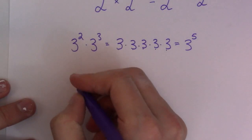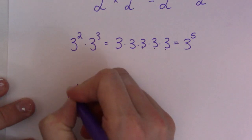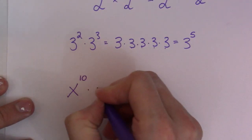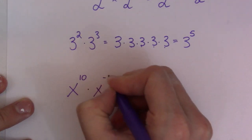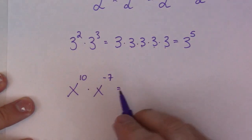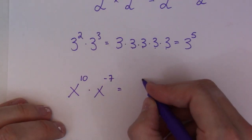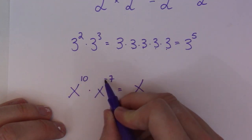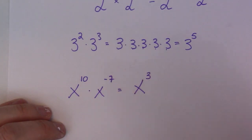So, let's use... instead of a number this time, let's use x to the 10 times x to the negative 7. So, the negative doesn't change anything. All we do is add. So, 10 plus negative 7 is 3. There you go.